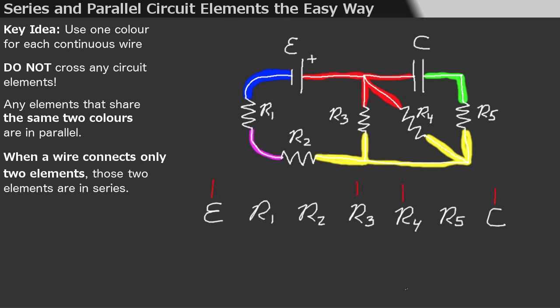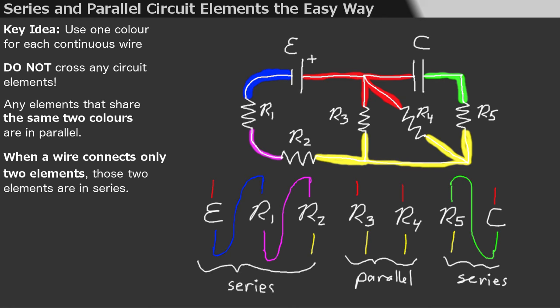Wires that connect only two elements indicate that those elements are in series. Romeo was noticing this as he drew on the schematic. Here, the capacitor and R5 are in series. Romeo also noticed that R2 and R1 are in series, and R1 and the EMF are in series. This makes a chain, which means that all three elements, the EMF, R1, and R2, are in series. Any electron that passes through R2 must also pass through R1 and the EMF. There are no other paths for the electrons to take between the EMF and R2.